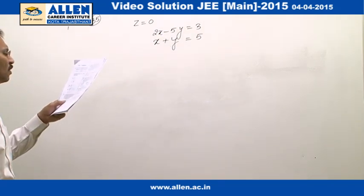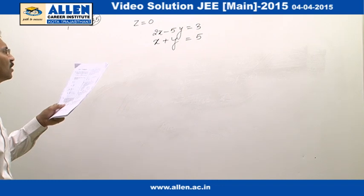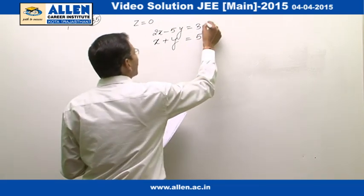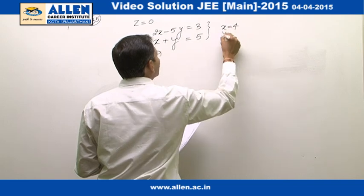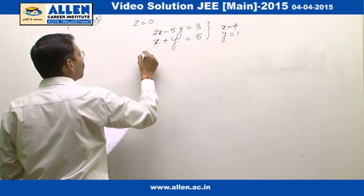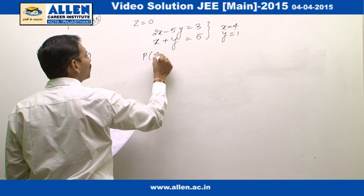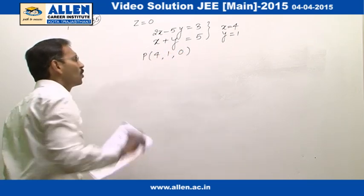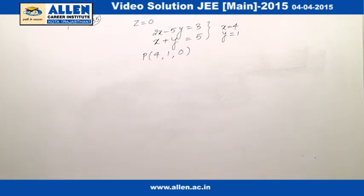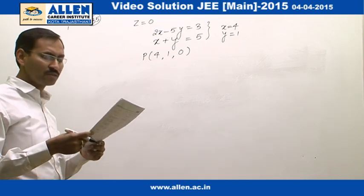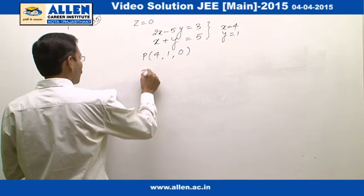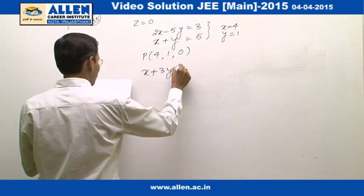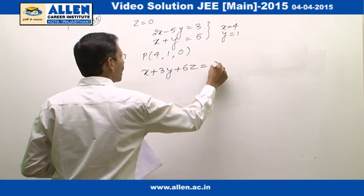By solving these equations, we get the point x equals 4 and y equals 1, so the point on this line is (4, 1, 0). Now the required plane is parallel to the plane x plus 3y plus 6z equals 1; therefore, that plane will be in the form of x plus 3y plus 6z equals lambda.